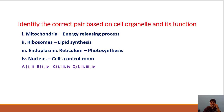Identify the correct pair based on cell organelle and its function: mitochondria — energy releasing organelle; ribosomes — lipid synthesis; endoplasmic reticulum — photosynthesis; nucleus — cell's control room. Mitochondria as energy releasing is correct. Ribosomes for lipid synthesis is wrong. Endoplasmic reticulum for photosynthesis is wrong. Nucleus as cell's control room is correct. So options 1 and 4 are correct — answer is B.